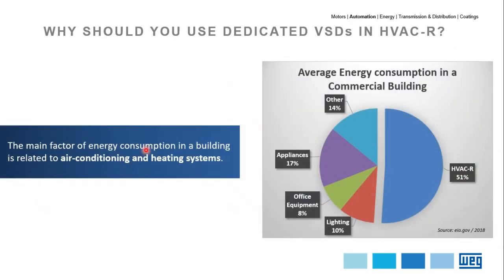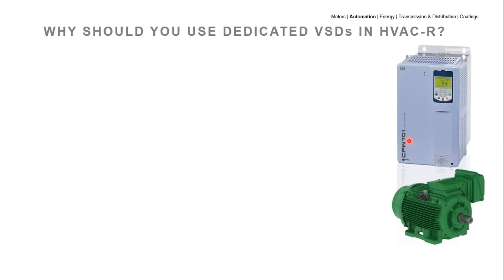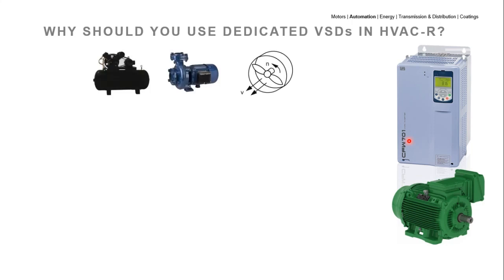The first thing is energy saving. The main factor of energy consumption in any building is related to air conditioning and heating systems. A study from 2018 shows that a little more than half of the energy consumed in a building is related to HVAC-R. So whatever you can do to reduce consumption in this area can have a big impact on overall energy use. By managing the compressor, pump, and fan — the three components with electric motors — you can greatly impact the building's total consumption.